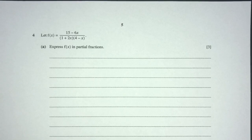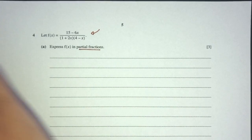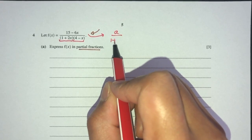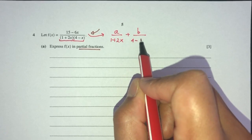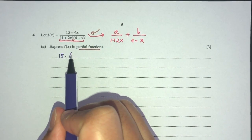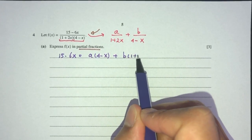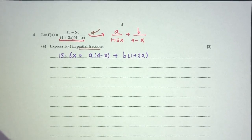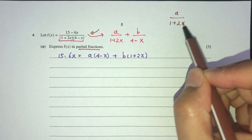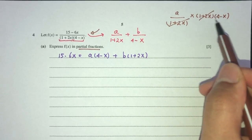Let's move on to question number 4. We have f(x) and need to express it in partial fractions. The denominator has two non-repeated linear factors, so we write: f(x) = A/(1 + 2x) + B/(4 − x). Multiplying through: 15 − 6x = A(4 − x) + B(1 + 2x).